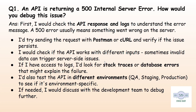Our first question is: an API is returning a 500 error — what do you do in this case? Imagine you are sending a request to an API and you get a 500 internal server error. A 500 error means something went wrong on the server. To debug it, first check the error message and API logs for clues. Second, try sending the request with Postman or cURL to see if it happens every time. Third, check if it's happening in all environments or just one, like staging versus production.